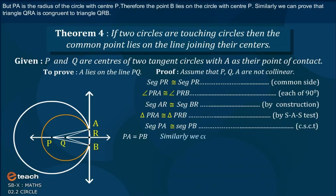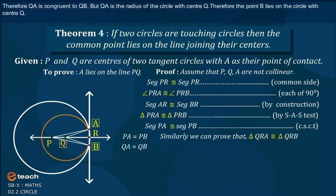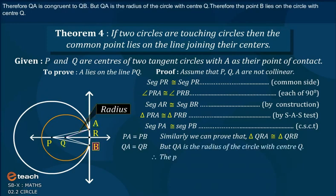Similarly, we can prove that triangle QRA is congruent to triangle QRB. Therefore, QA is congruent to QB. But QA is the radius of the circle with center Q. Therefore, the point B lies on the circle with center Q.